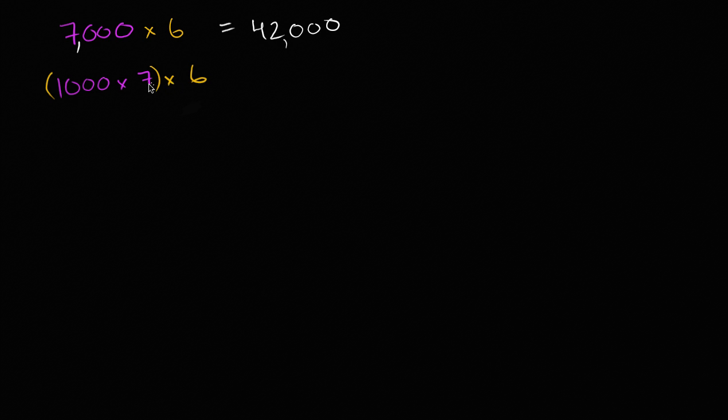Or you could do the 7 times 6 first. And this right over here, this is the associative property of multiplication. It sounds very fancy, but it just says that we could multiply the 7 times 6 first before we multiply by the 1,000. So we could rewrite this as 1,000 times, and if we're going to do the 7 times 6 first, we could put the parentheses around that. Times 7 times 6. Notice, it's 1,000 times 7 times 6. I could do 1,000 times 7 first to get 7,000. Or I could do the 7 times 6 first to get, and you know where this is going.